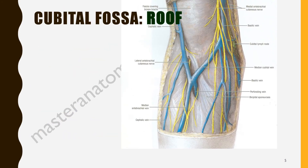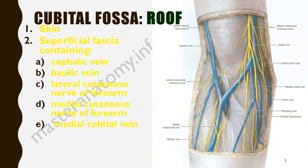What forms the roof? The roof is formed by the skin and the superficial fascia, which is made up of some vessels including the cephalic vein, the basilic vein, and the median cubital vein — the median cubital vein connecting the basilic vein and the cephalic vein. We also have the fascia of the biceps brachii and the bicipital aponeurosis that helps to enforce it. Note that the bicipital aponeurosis is beneath the median cubital vein, so the veins are on top of it.